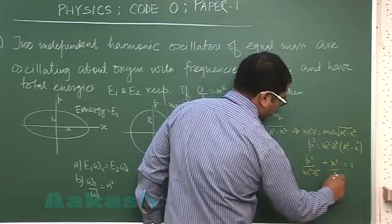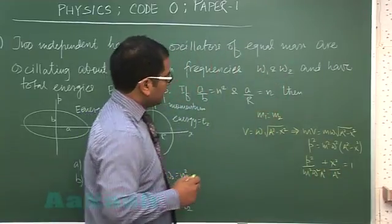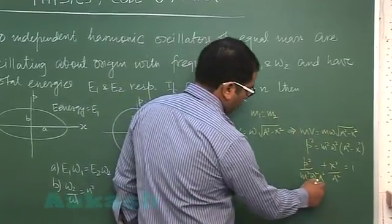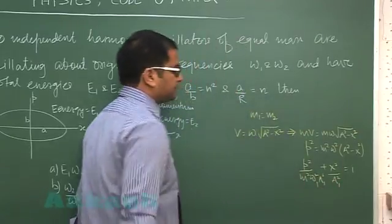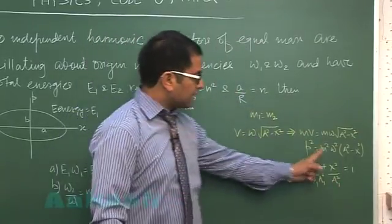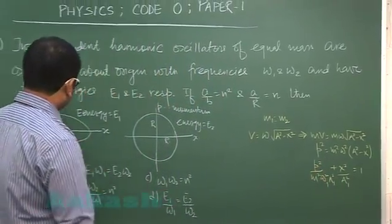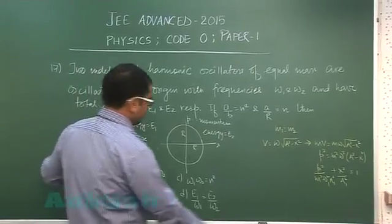There is no point of writing m1, m2 because they are the same. Omega 1 and a1 are their respective amplitudes. So this is how we get the graph of p versus x as an ellipse. According to the first data, you would see that a is a1.